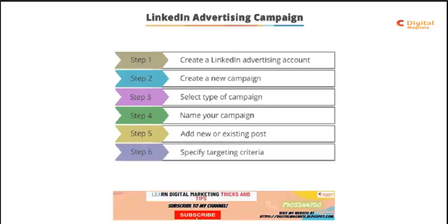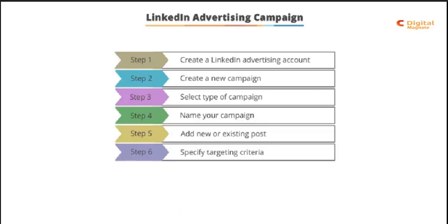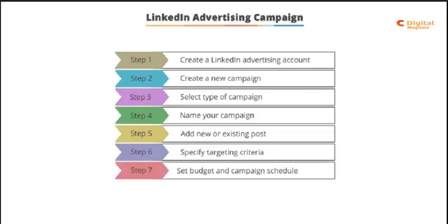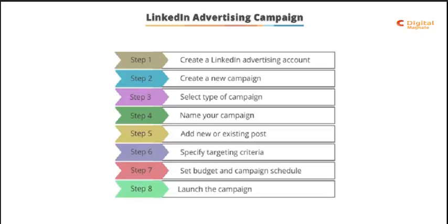Six is the audience creation stage. Seven is where you're going to set your budget and define your campaign schedule. And finally, number eight is where you're going to go ahead and actually launch the campaign.